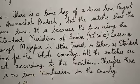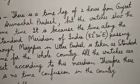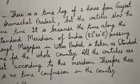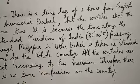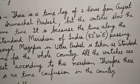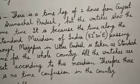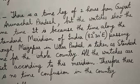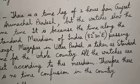The places in the east are one hour ahead, and the places towards the west of this meridian are one hour behind.